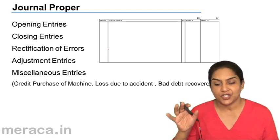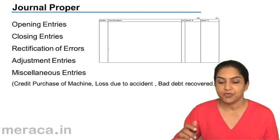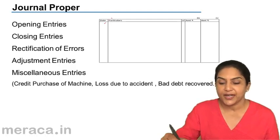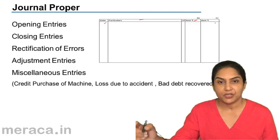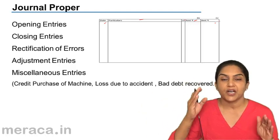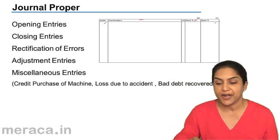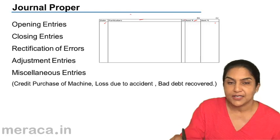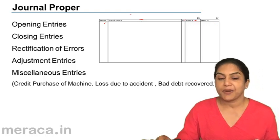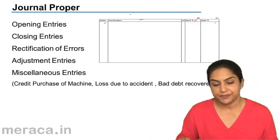Journal proper is the journal just as we have discussed before, with the date, particulars, ledger folio, amount and amount. When we first understood how a journal is prepared, that format — that is the format of the journal proper.